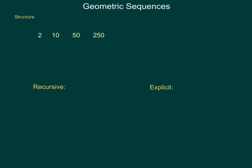In order for an item to be a geometric sequence, in order to move from term to term — like we have for this sequence shown here — we have to multiply by the same item. So, in order to move from 2 to 10, we multiplied by 5. To move from 10 to 50, we multiplied by 5. And to move from 50 to 250, again, we multiplied by 5. Any time we have a sequence where we're multiplying again and again, it is geometric.